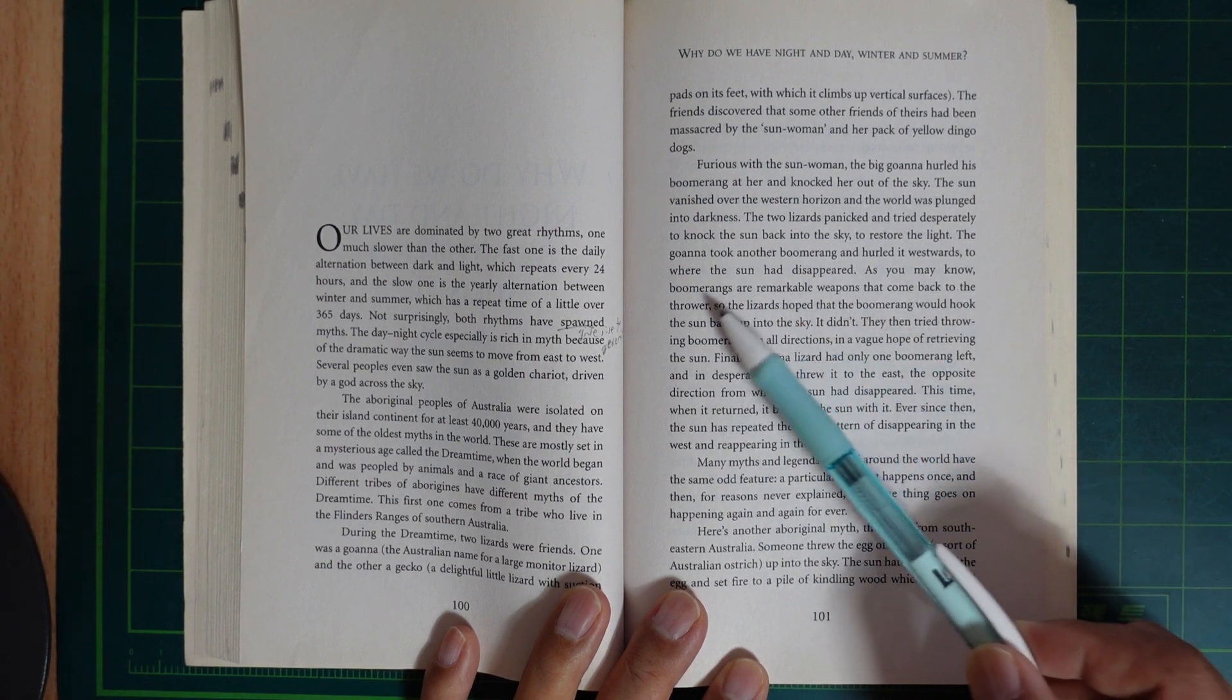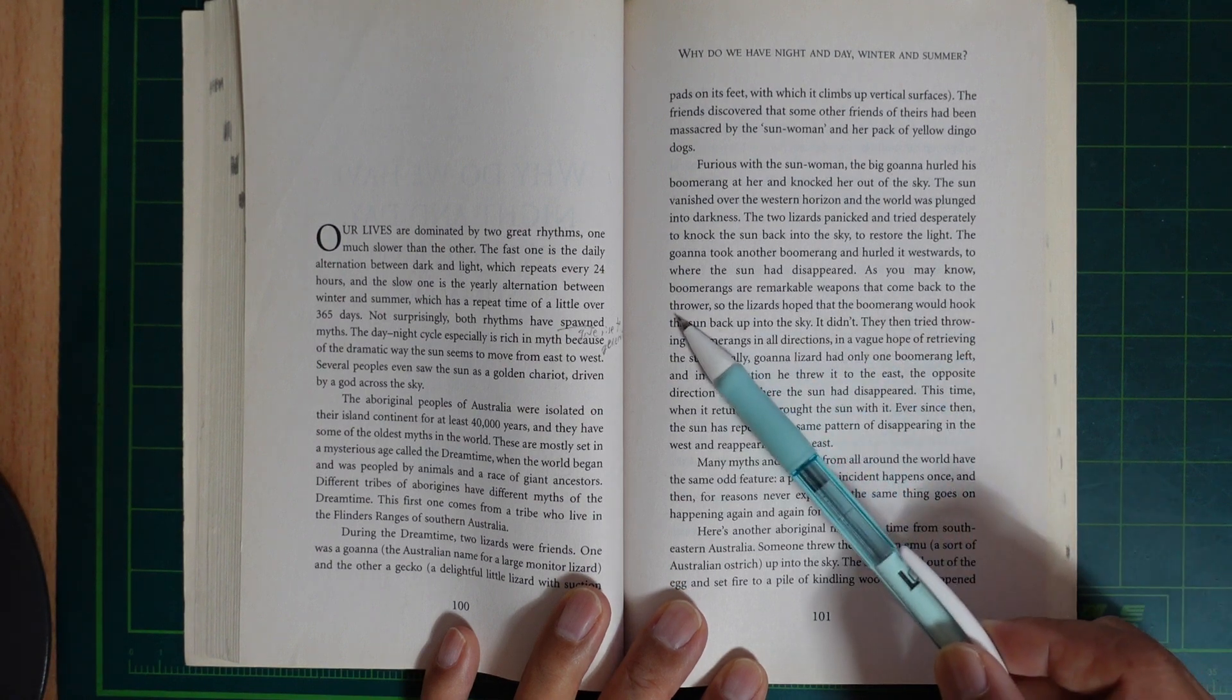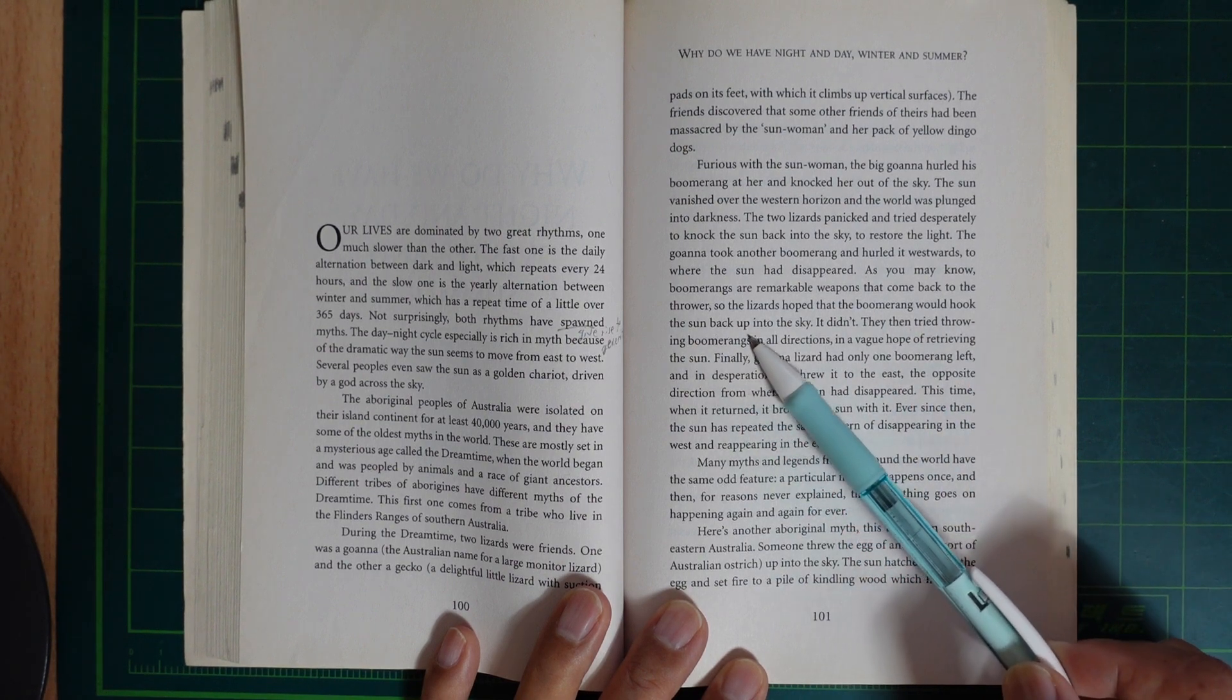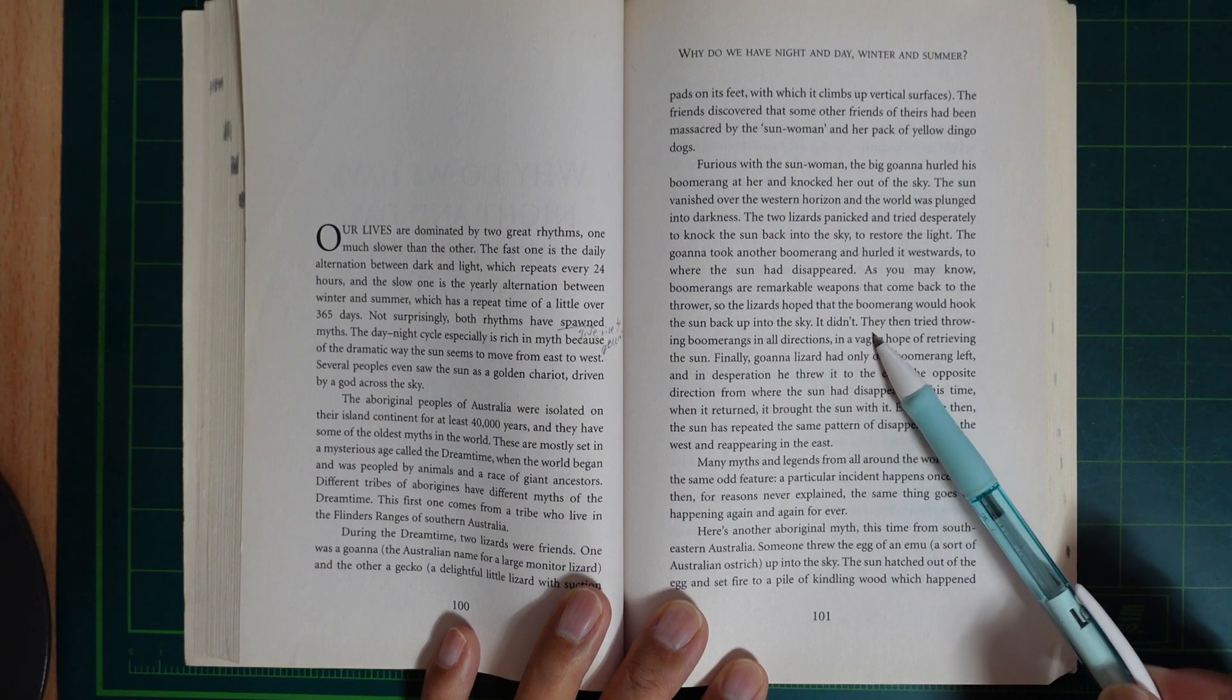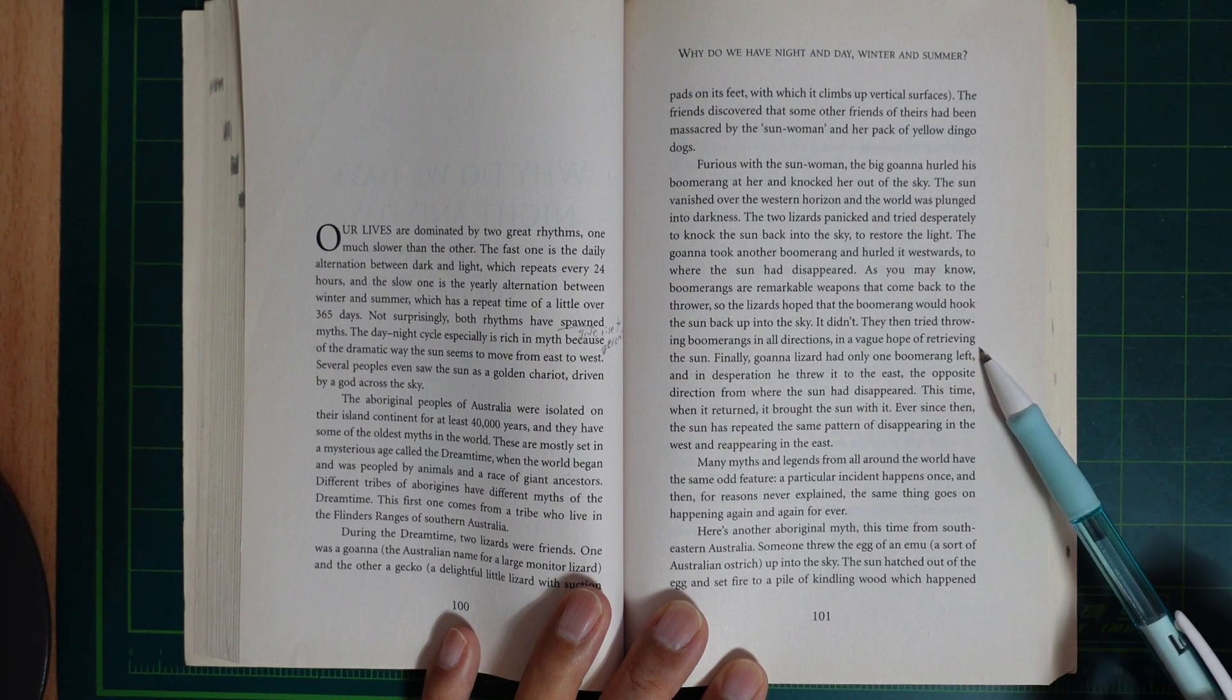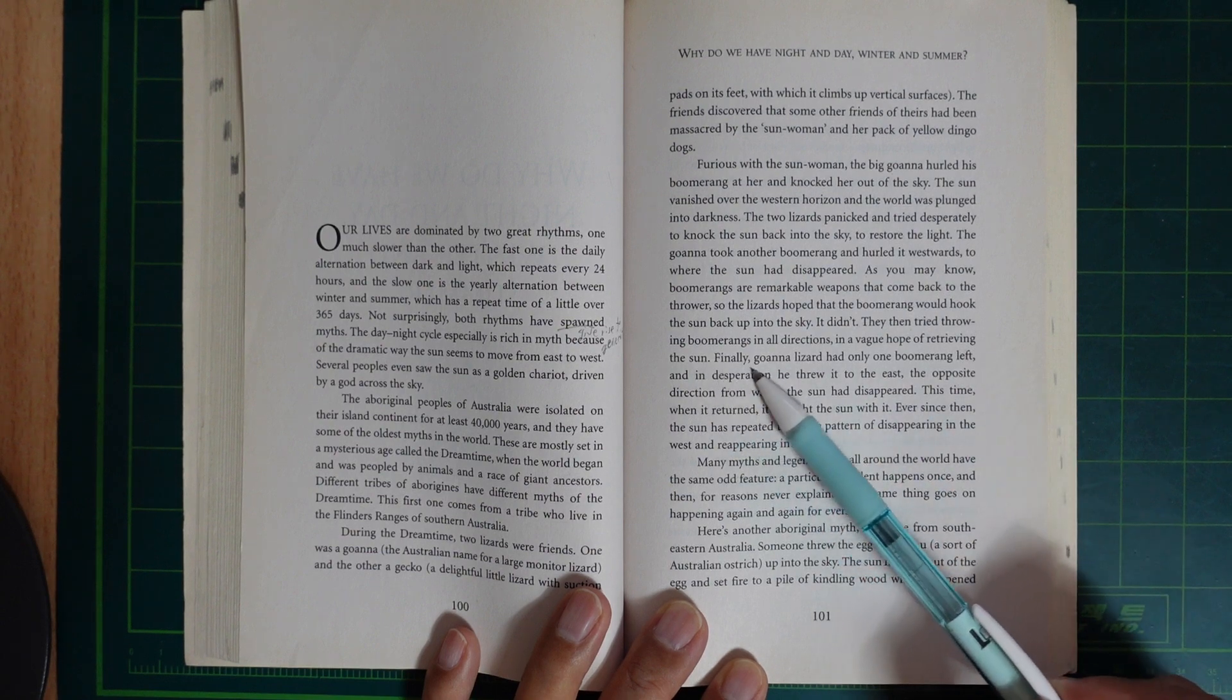The goanna took another boomerang and hurled it westward toward where the sun had disappeared. As you may know, boomerangs are remarkable weapons that come back to the thrower. So the lizard hoped that the boomerang would hook the sun back up into the sky. It didn't. They then tried throwing boomerangs in all directions in a vain effort of retrieving the sun.